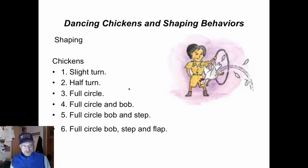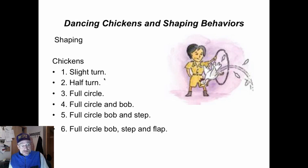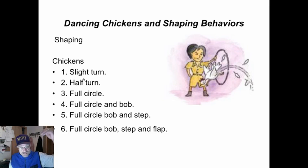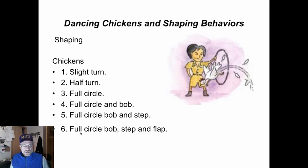If you want to teach a chicken to dance: first, every time the chicken accidentally turns slightly, you reward the chicken. Then every time it turns a half turn, you reward it. And then every time it turns a full circle — bob, step, and flap.